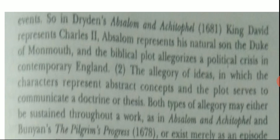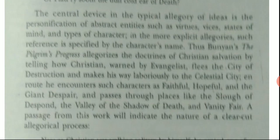In most allegories there is the use of personification — the personification of abstract ideas, emotions, feelings, virtues, good qualities, and bad qualities. The central device in a typical allegory of ideas is the personification of abstract entities such as virtues, vices, states of mind, and types of character. In more explicit allegories, this is specified by the character's name — characters may be named Faithful, Hopeful, Despair, or Satan.